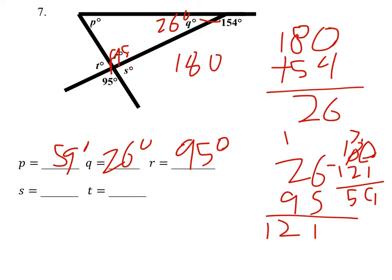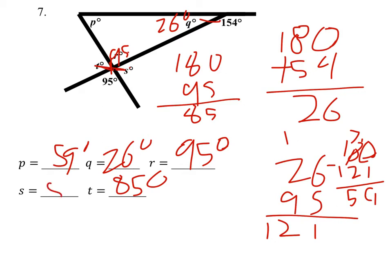180 minus 95 equals 85. These two right here are vertical, which means they're the same. So S is 85 degrees. That is correct.